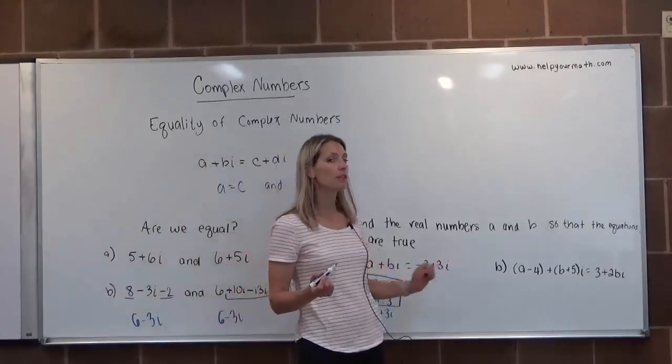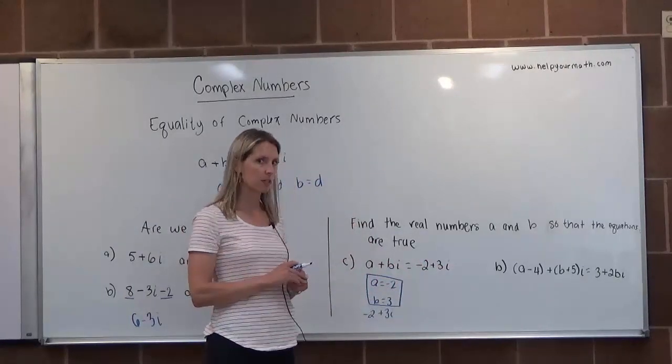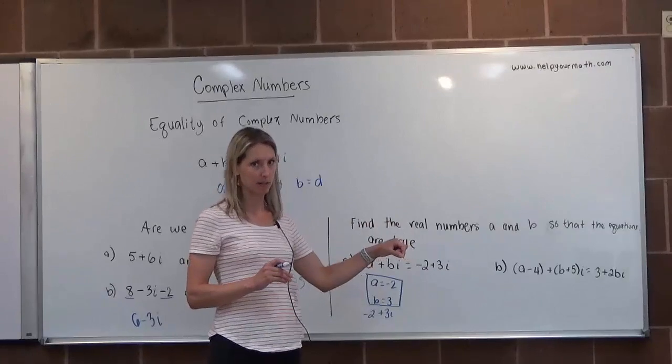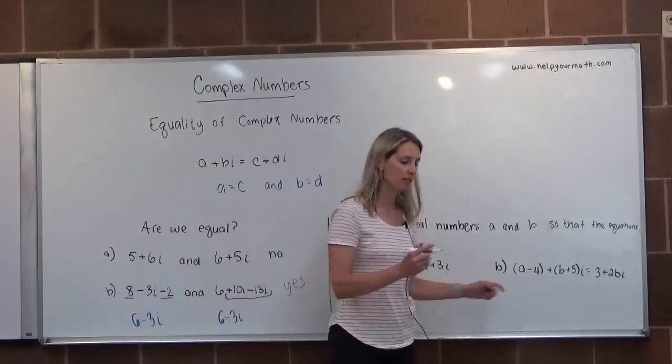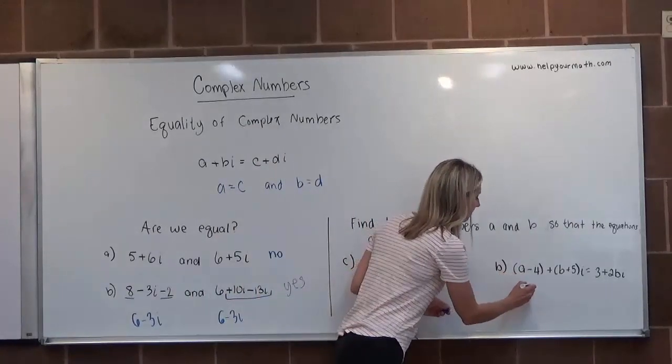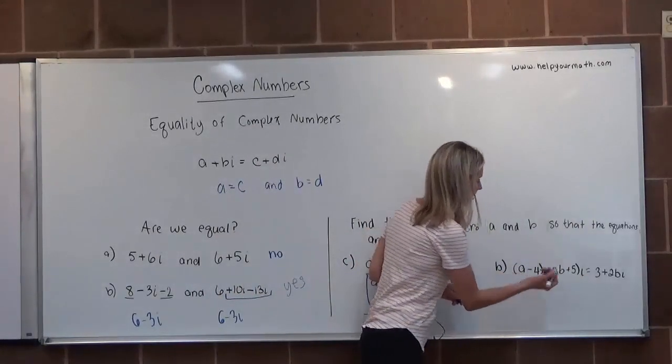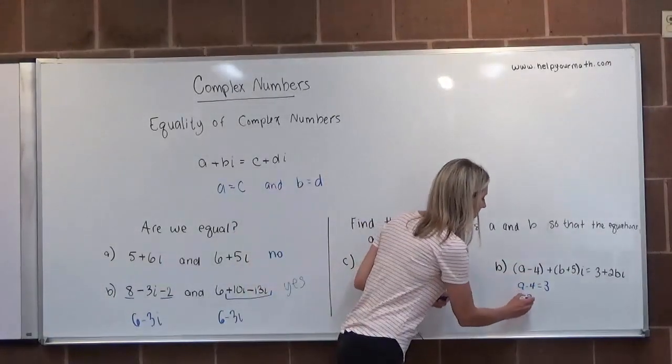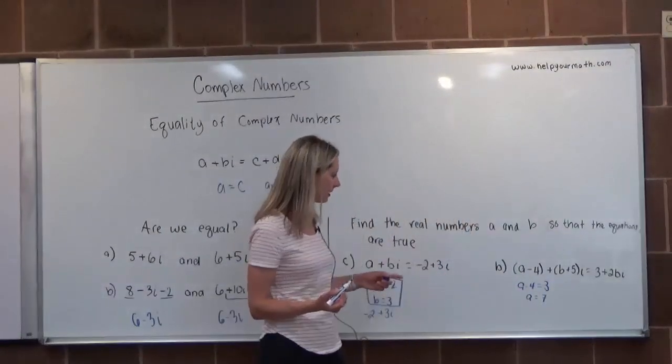Our second example is a little more involved. In order for two complex numbers to be equal, the real parts must match and the complex parts must match. Our real part here is A-4, so A-4 must equal 3. Now we need to figure out the value of A, so we're going to get A by itself by adding 4 to both sides. We get A=7.